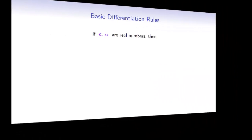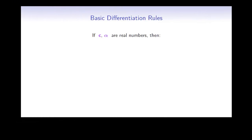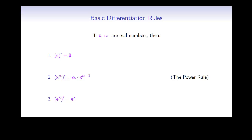Let's begin by presenting seven basic rules, without proof. If c and alpha are real numbers, then the derivative of a constant function c prime is equal to zero. The derivative of x to the alpha is equal to alpha times x to the alpha minus one — this is called the power rule. The derivative of e to the x is equal to e to the x.